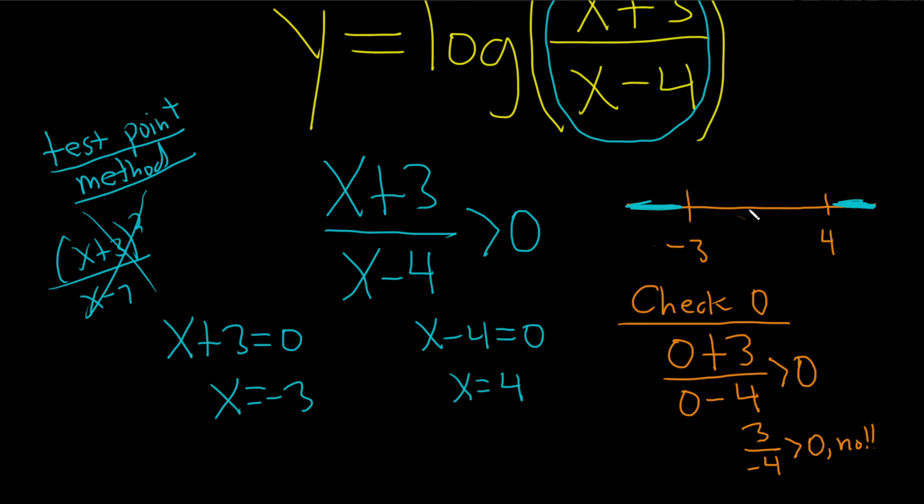So recap. We pick 0 from here. Because it wasn't true, we didn't shade. And our pattern is shade, no shade, shade. What if it had been true? Just for fun, because people always wonder. What if it had been this? Then it would be yes.